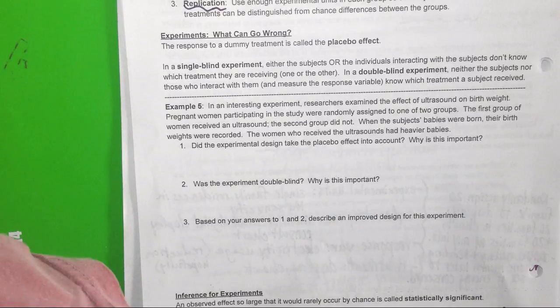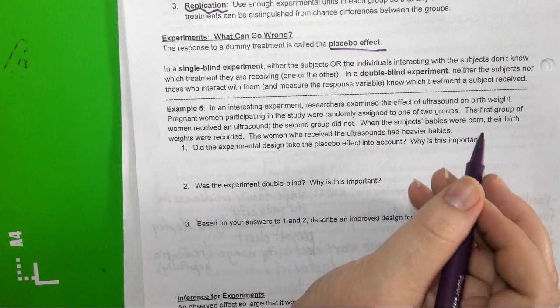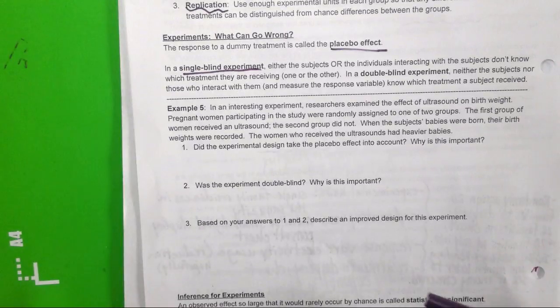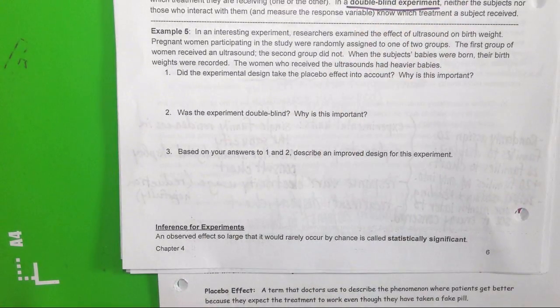Experiments and what can go wrong. The response to a dummy treatment is called the placebo effect. In a single-blind experiment, either the subjects or the individuals interacting with the subjects don't know which treatment they are receiving, which we discussed yesterday. Example five: In an interesting experiment, researchers examined the effect of ultrasound on birth weight. Pregnant women participating in the study were randomly assigned to one of two groups. The first group of women received an ultrasound. The second group did not. When the babies were born, their birth weights were recorded. The women who received the ultrasounds had heavier babies.